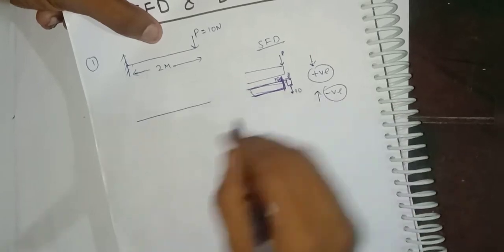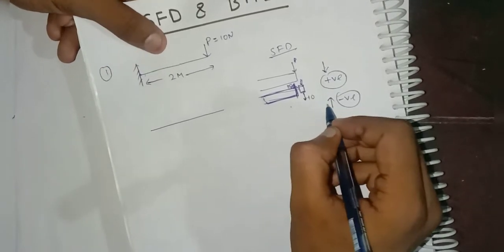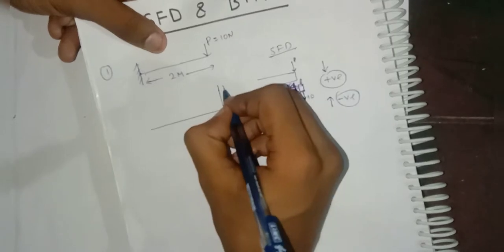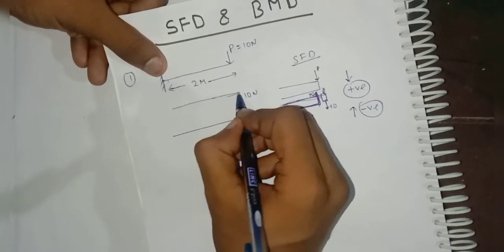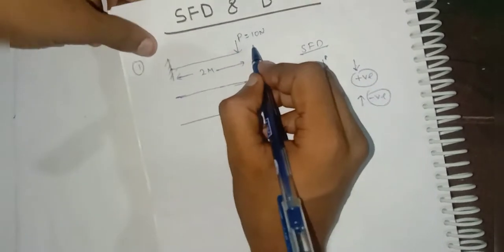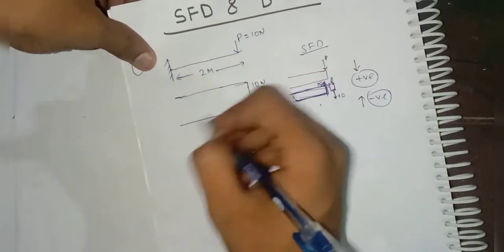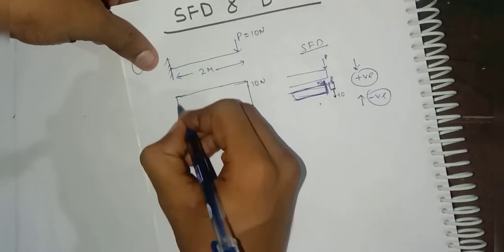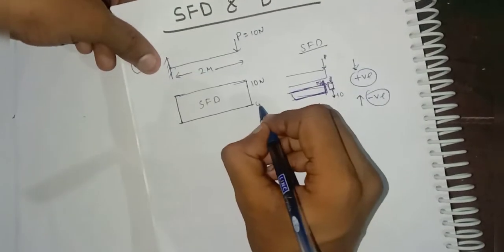So here P is 10 Newton, and we have to consider this as positive, so this will be your 10 Newton. There is no any other force, so it will be constant up to the support. To resist this 10 Newton, the beam will generate an equal and opposite force to cancel it, so finally we get zero here. This is your SFD.